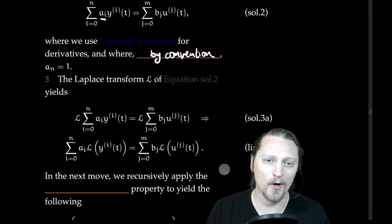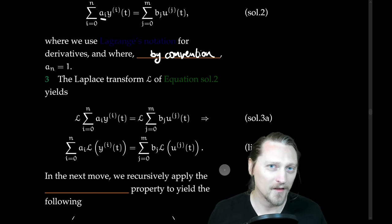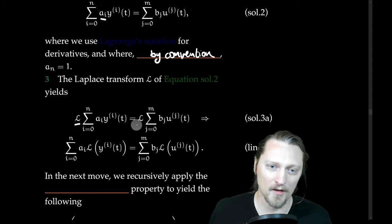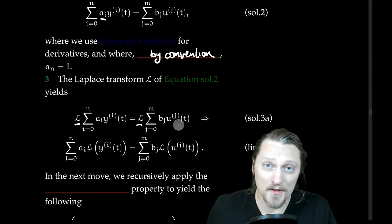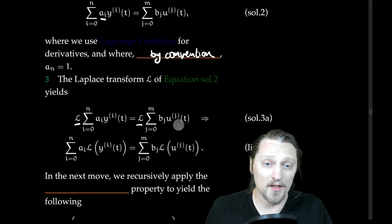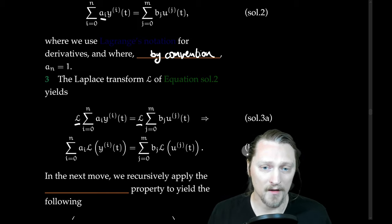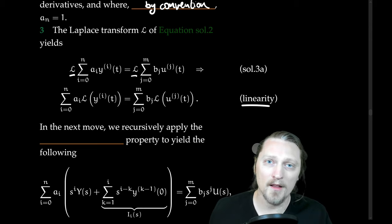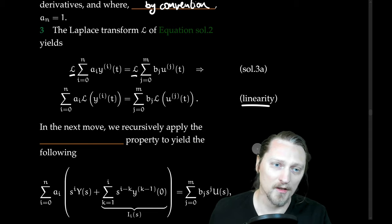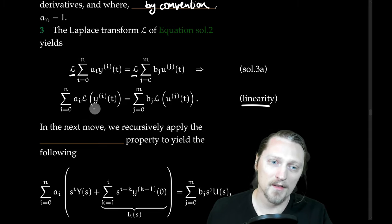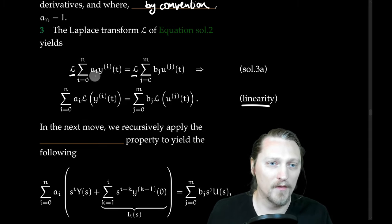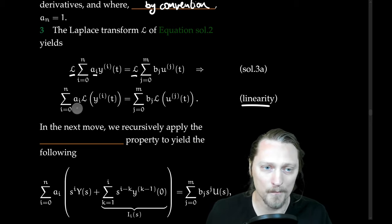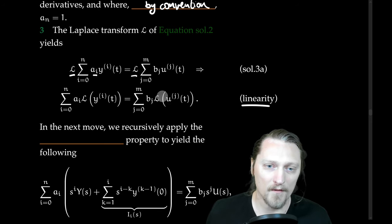The Laplace transform L of both sides gives us the Laplace transform applied to the sum itself. Then we can use the linearity property to bring the Laplace transform inside the summation. The coefficients A_i are just constants and can be pulled outside of the Laplace transform, giving us this expression.